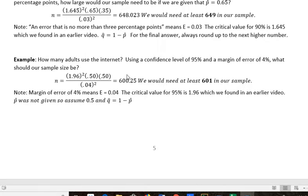Okay, here's another example. How many adults use the internet? Using a confidence level of 95% and a margin of error of 4%, what should our sample size be? Notice in this problem that we are not given p hat. p hat was not given, so we assume that it's 0.5, which means q hat is also going to be 0.5 because it's 1 minus 0.5.